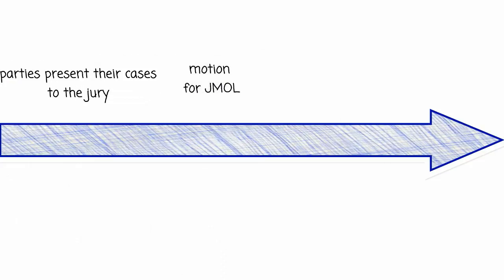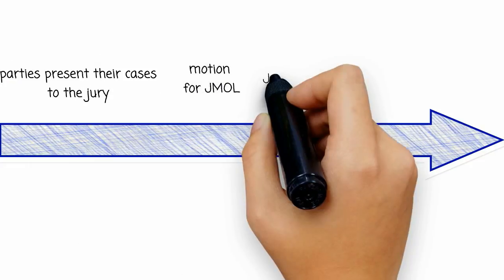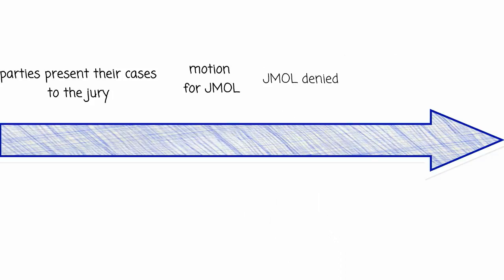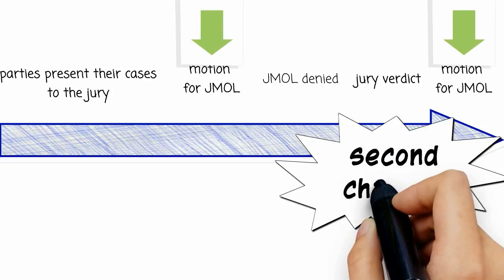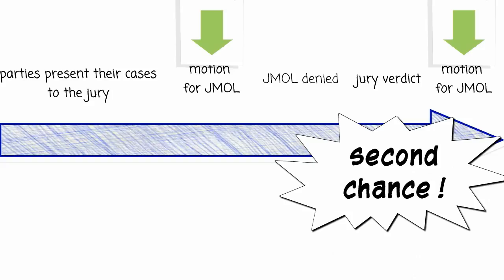So again, the order is: first, one or both of the parties finish presenting their cases to the jury; then we can have a motion for judgment as a matter of law. If the judge denies the motion, the case goes to the jury and the jury will render a verdict. After the jury renders its verdict, a party can move again for judgment as a matter of law, so long as, before the jury started deliberating, the party also moved for judgment as a matter of law.